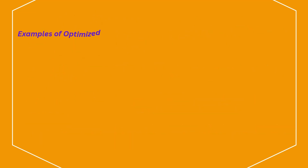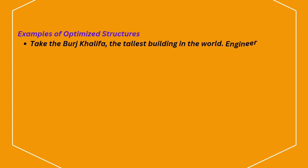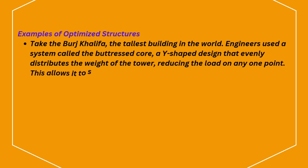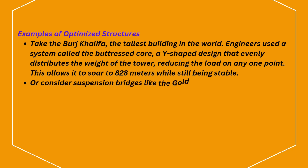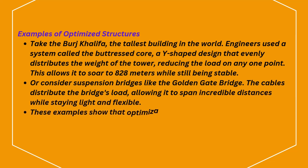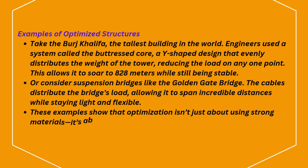Take the Burj Khalifa, the tallest building in the world. Engineers used a system called the buttressed core — a Y-shaped design that evenly distributes the weight of the tower, reducing the load on any one point. This allows it to soar to 828 meters while still being stable. Or consider suspension bridges like the Golden Gate Bridge, where cables distribute the bridge's load, allowing it to span incredible distances while staying light and flexible.